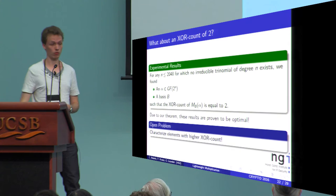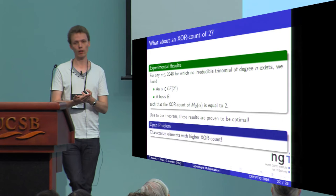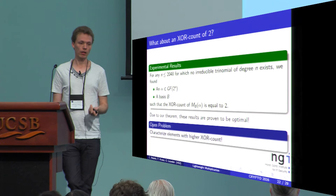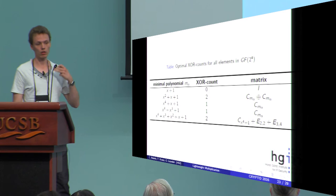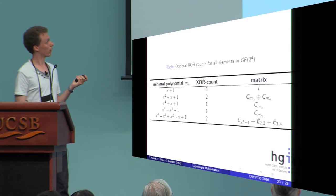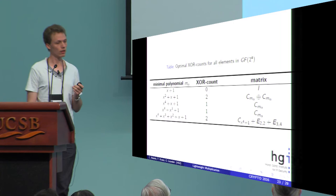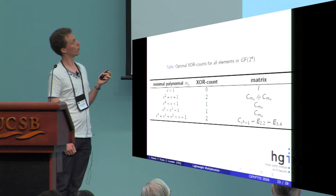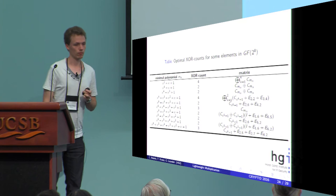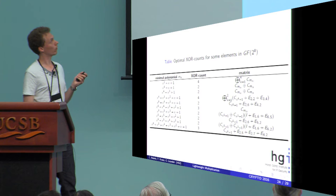What we conjecture is that if we want to have an XOR count of two then the minimal polynomial of the element has to be of weight smaller or equal to five. Because in all our experiments if we have an XOR count of two then we always have a pentanomial or a trinomial in a subfield. This is also interesting to see: if we are in a subfield which means that the minimal polynomial does not have full degree then the XOR count can never be one. If you go to higher fields for example GF(2^8) then the XOR count of the subfield elements are among the highest XOR counts which is quite interesting.